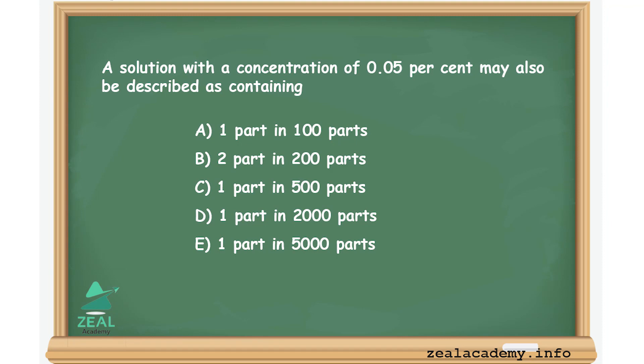A solution with a concentration of 0.05% may also be described as containing: Option A, 1 part in 100 parts; Option B, 2 parts in 200 parts; Option C, 1 part in 500 parts; Option D, 1 part in 2000 parts; Option E, 1 part in 5000 parts.